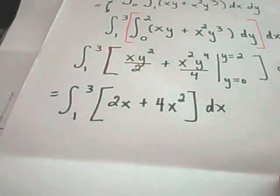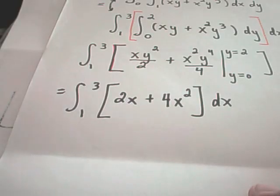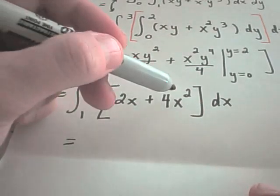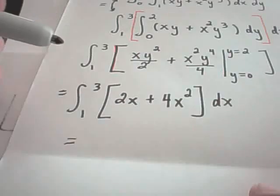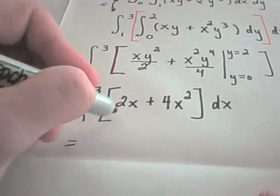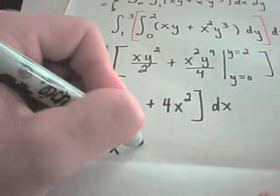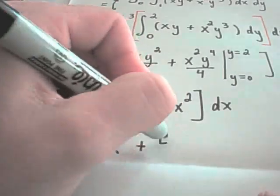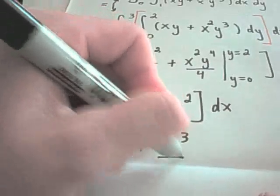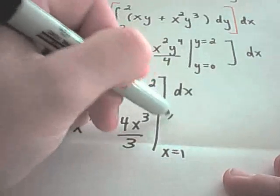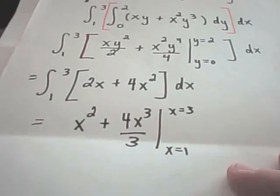And now you're back to just regular old integration, stuff that you saw probably in first semester calculus. You have a function all in terms of x. We're integrating this with respect to x. The antiderivative of 2x is x squared. The antiderivative of 4x squared would be 4x cubed over 3. And now we're evaluating this from x equals 1 to x equals 3.